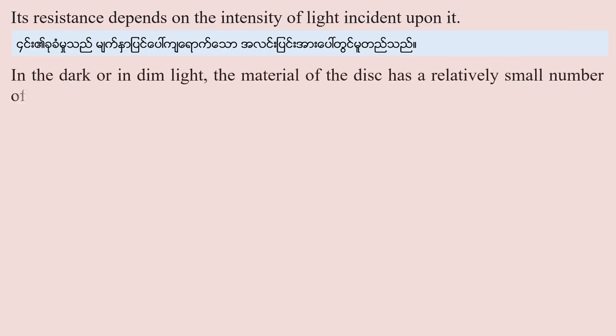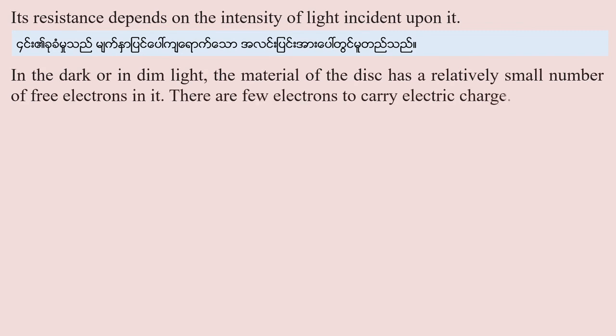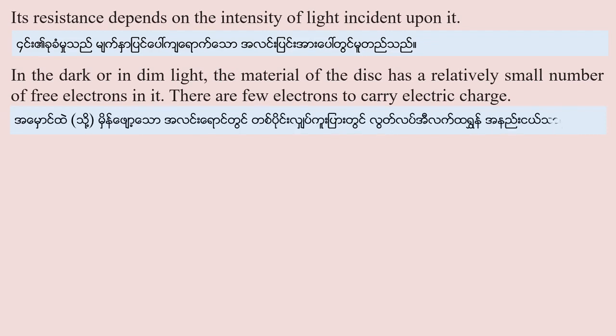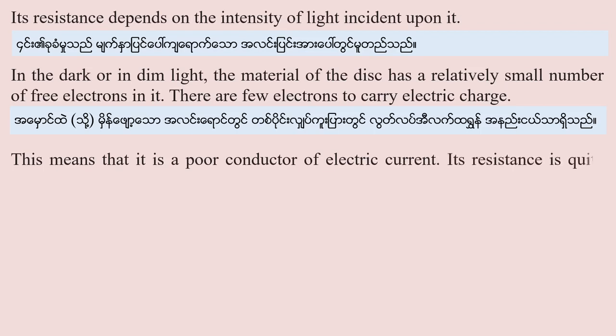In dark or dim light, the material of the disk has a relatively small number of free electrons in it. There are few electrons to carry electric charge, meaning it is a poor conductor. Its resistance is quite high, approximately nearly equal to one megaohm.